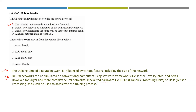Statement C: neural networks mimic the human brain — they are inspired by the brain's structure, but do not exactly replicate it, because neural network output accuracy can be improved through training, unlike the human brain. Statement D: some neural networks include feedback — recurrent neural networks and feedback neural networks include feedback loops where the output of a layer is fed back into the network.